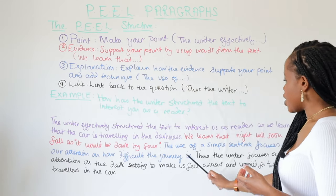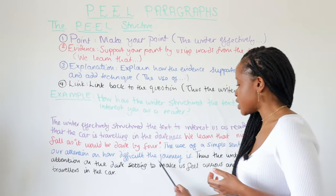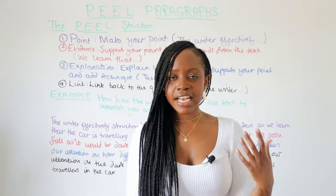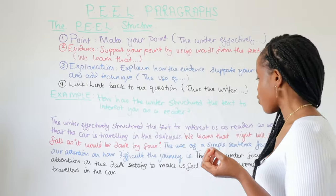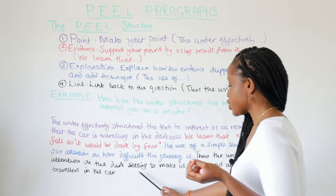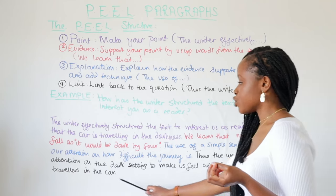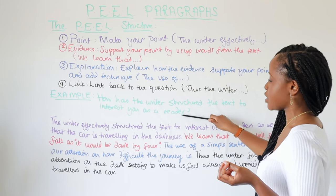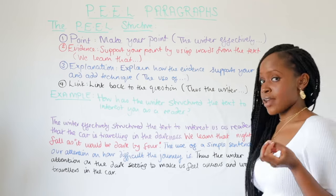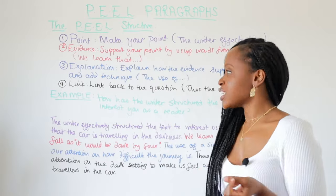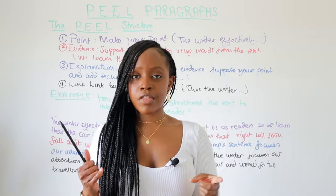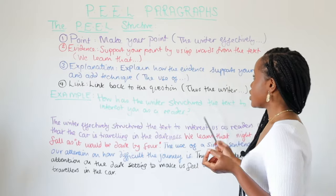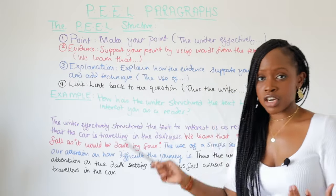For the Explanation: 'The use of a simple sentence focuses our attention on how difficult the journey is.' As you can see, 'the use of' can work for any explanation in any paragraph. And finally the Link: 'Thus, the writer focuses our attention on the dark setting to make us feel anxious and worried for travelers in the car.' This links back to the question about interesting the reader, since feeling anxious and worried makes us interested.